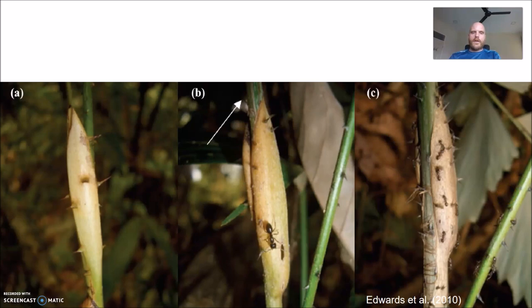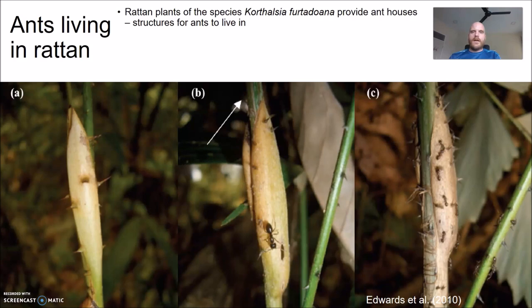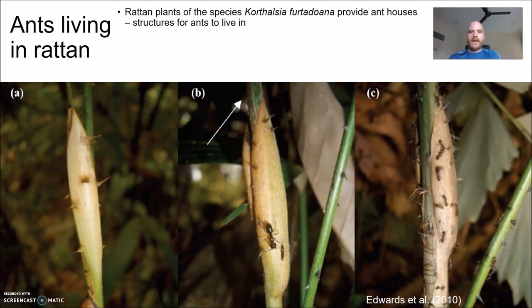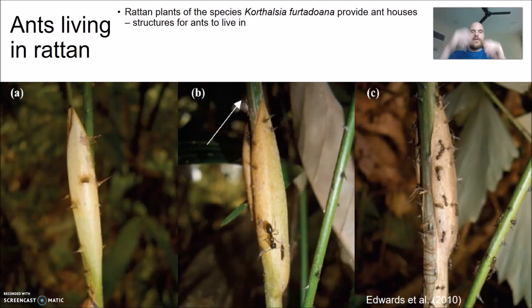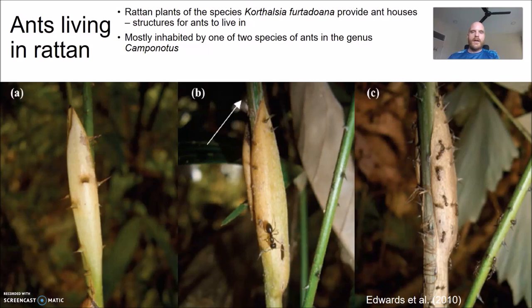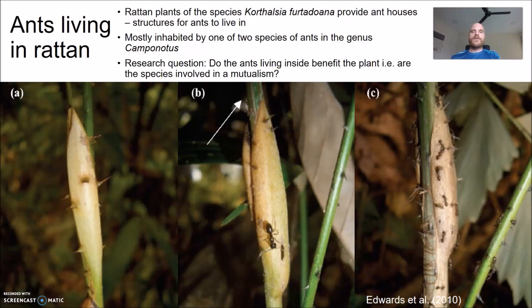Moving on from Macaranga to another common ant plant: the rattans. These are often climbing plants reaching high into the forest canopy, with lots of spikes — mainly to protect them against mammalian herbivores — but they also sometimes have ants living inside them to protect against invertebrate herbivores like caterpillars. I'll talk specifically about the rattan species Korthalsia furtadoana, which grows ant houses out of leaf sheaths. These hollow leaf sheaths house the ants' brood and reproductives — the entire colony spread out between many leaf sheaths all the way up the vine.